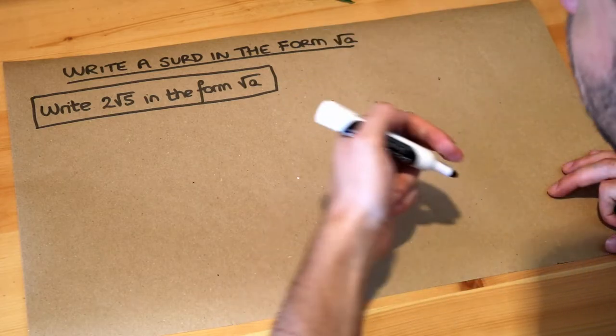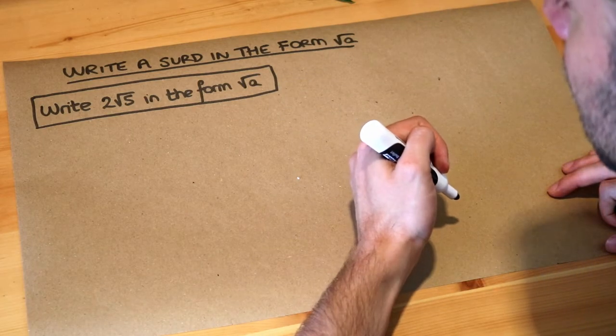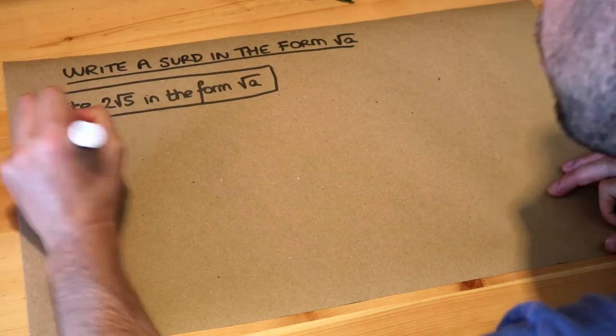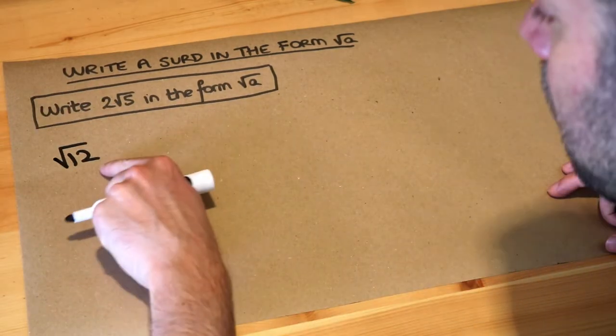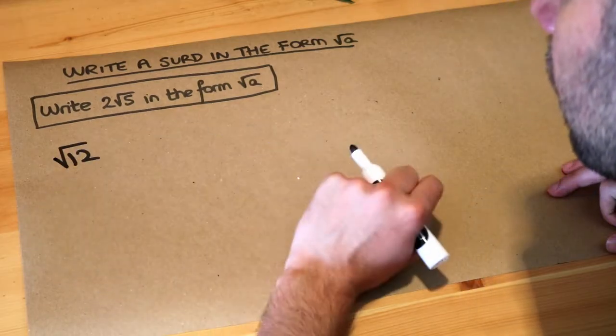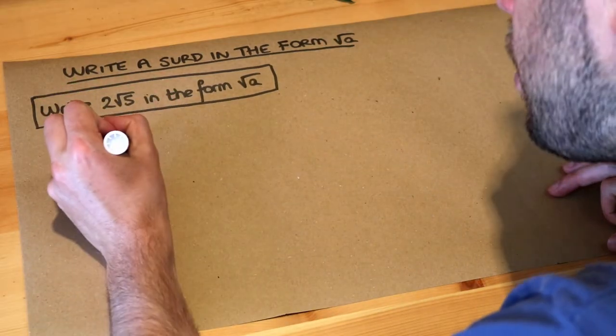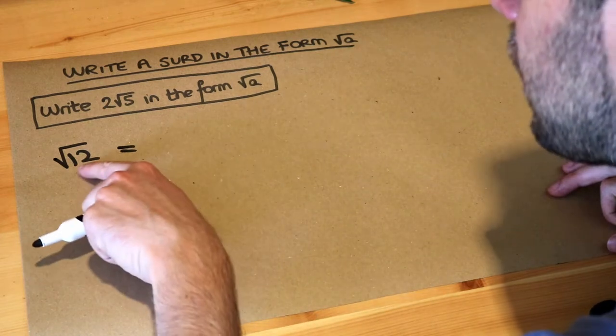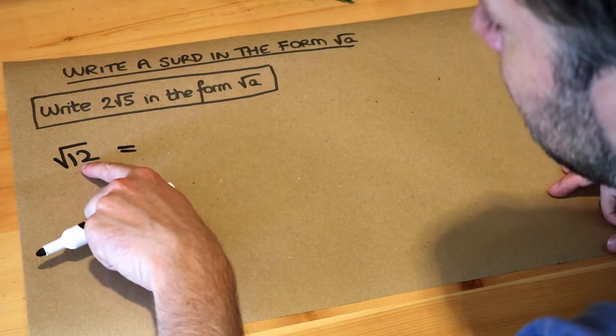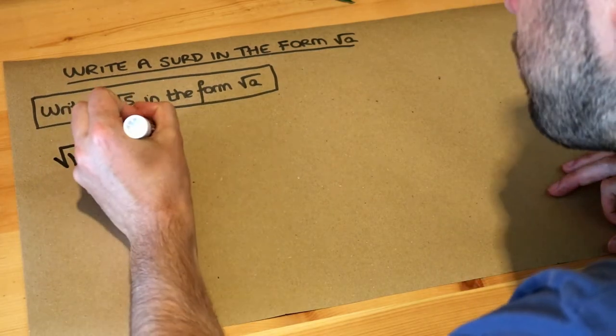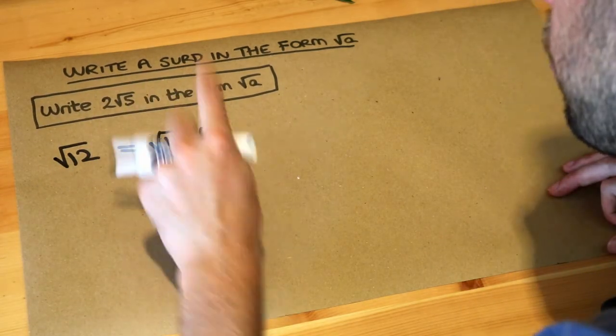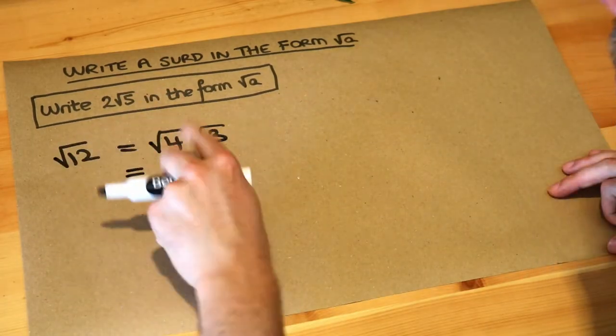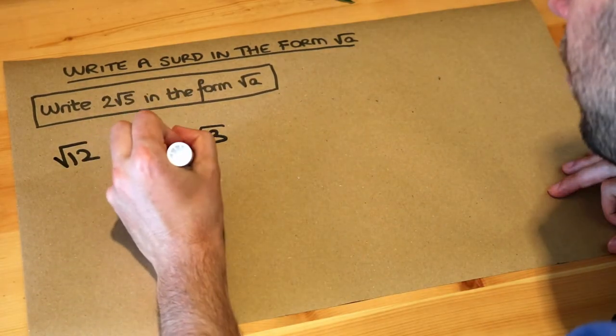So this is basically the opposite of simplifying surds. Because we've seen in previous videos we had, say, root 12, and we want to simplify that by making that number under the square root as small as possible. We'd find the biggest square number that's a factor of 12. Well, what's the biggest square number that's a factor of 12? It's 4, so we can write it as root 4 root 3, because 4 times 3 is 12. And then the square root of 4 is just 2, so you get 2 root 3.